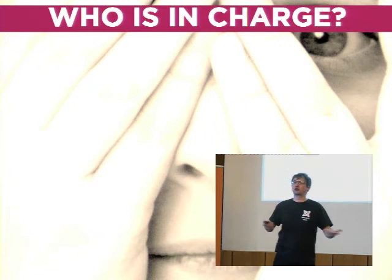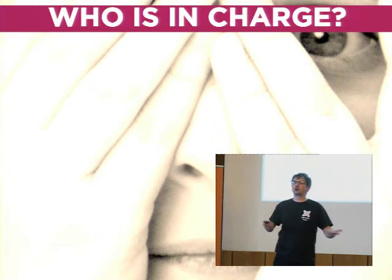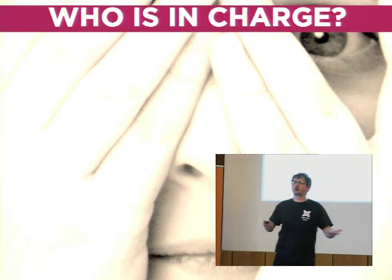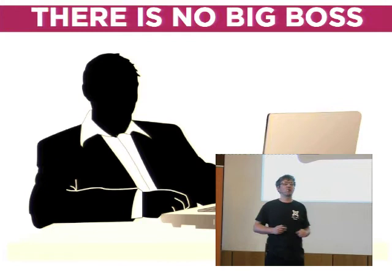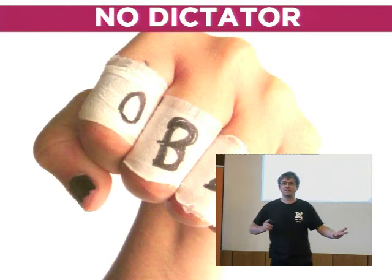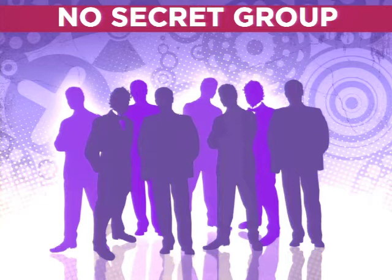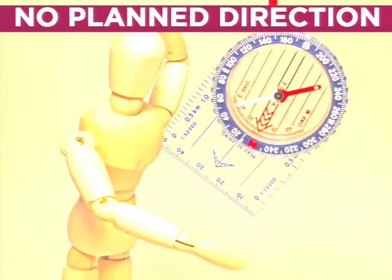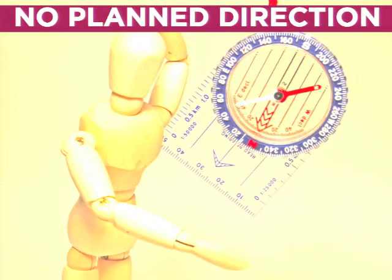So what is the structure of the Joomla community? The first thing is: who's in charge of Joomla? And the answer is no one. We don't have a big boss. Some other open source CMSs have a big boss — we don't. We don't have a dictator, benevolent or otherwise. We don't have a secret group. And what's really strange is we don't have a planned direction either. What happens will happen — if people contribute to it, that's what's going to happen.